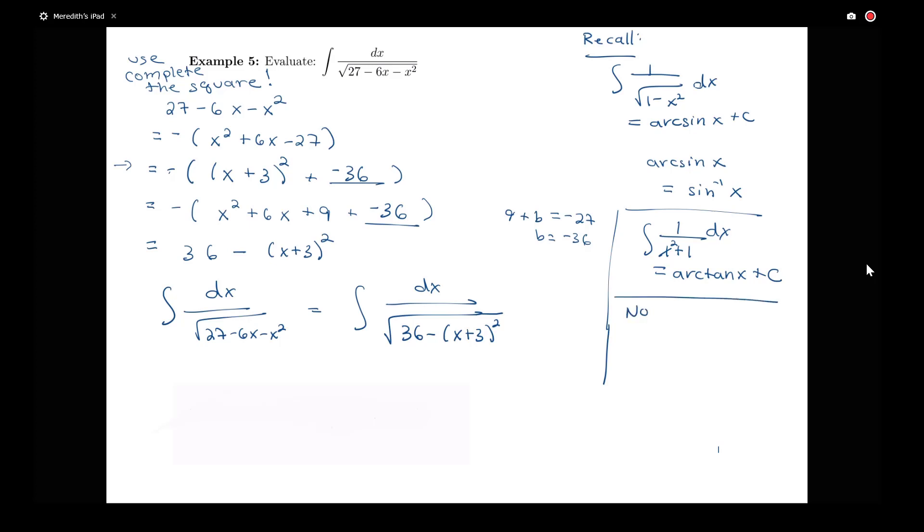But to save us a little time since we've already seen how that substitution procedure can go, we're going to note that we have the following rule that the integral of 1 over the square root of a squared minus x squared dx is equal to arc sine of x over a plus c. As long as we have a positive a that we're considering here.